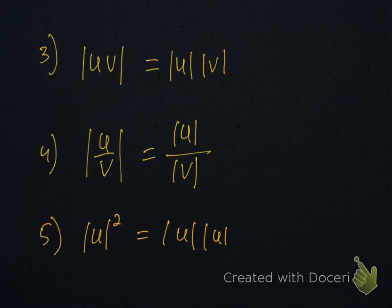Property number 3. If two complex numbers multiply, then we can separate them by writing modulus u and modulus v. This is property number 3. When two complex numbers divide like here, we can write them as modulus u over modulus v. If we have power 2 or any other power, we can break the complex number like this. Modulus u times modulus u.